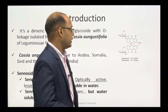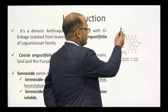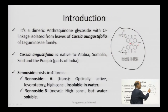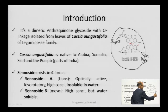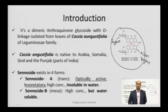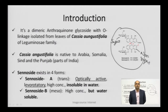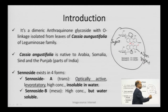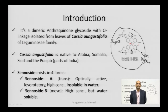Senosides — if you look at the screen, this is a structure of senoside. It is composed of a sugar moiety and a non-sugar moiety. Together they form a glycoside. If you look at the structure deeply, you can analyze that it is a dimer — you have two anthracene rings with a ketone group forming the anthraquinone. So it is a dimeric anthraquinone glycoside with O-glycoside linkage, isolated from the leaves of Cassia angustifolia.